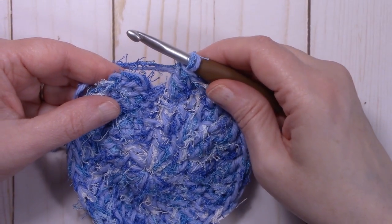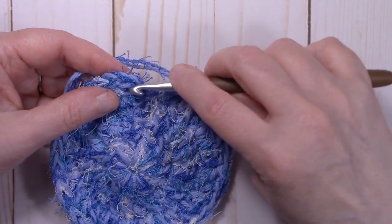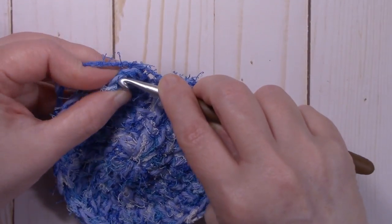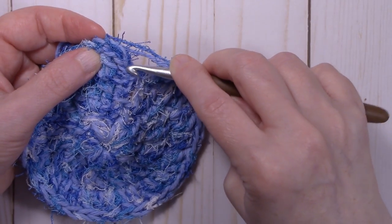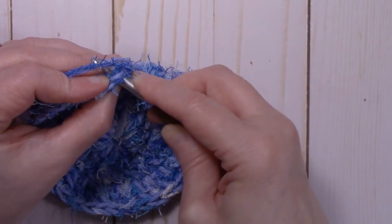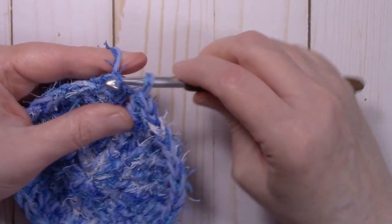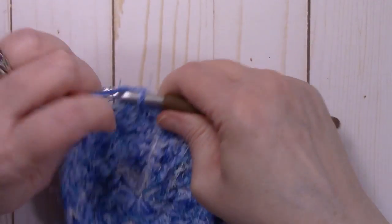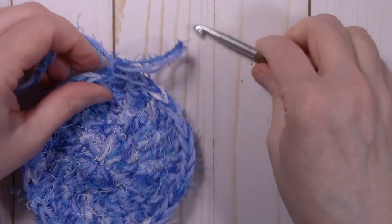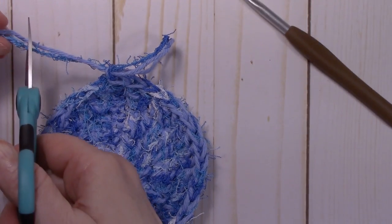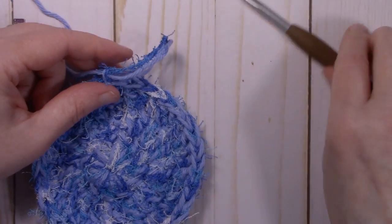We're at the end of round three. We now have 36 double crochet, and we're going to slip stitch to the top of that chain three. So it's one, two, three, the beginning chain three. And you can go ahead and fasten off, leaving just a little bit of a tail so that you can weave it in.